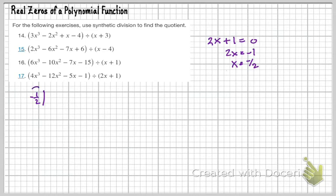And when we use synthetic division, the zero of that polynomial sits out here. Now this may not necessarily be a zero of this polynomial here, the 4x cubed minus 12x squared minus 5x minus 1. But it is a zero of the divisor. And that's what we're looking for here. So that goes for all of these.